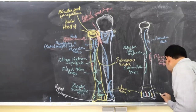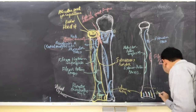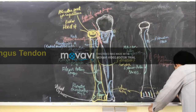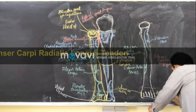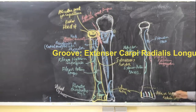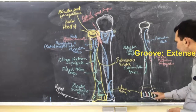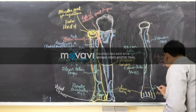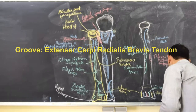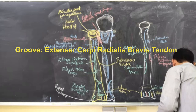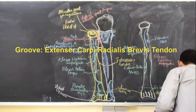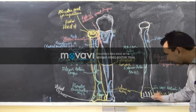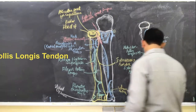The second groove at the distal end is for the extensor carpi radialis brevis muscle tendon, which passes through from here. The third groove is for the extensor pollicis longus and extensor indicis muscles. The fourth groove, which is present on the medial side adjacent to the ulnar notch, is for the extensor indicis muscle tendon.